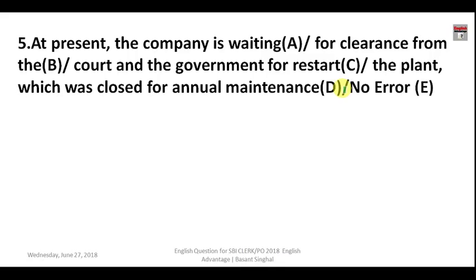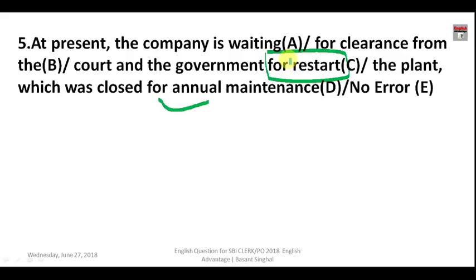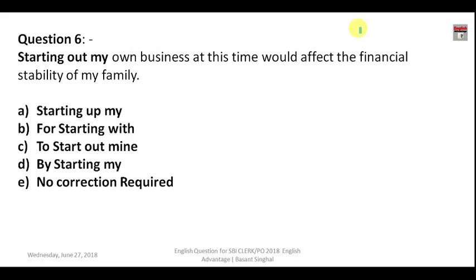Question number five: 'At present the company is waiting for clearance from the court and the government for restart the plant, which was closed for annual maintenance.' The company is waiting for clearance to restart the plant. In place of 'for restart' you should say 'to start' or 'for restarting', because 'for' is a preposition. The answer is C.